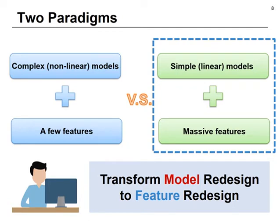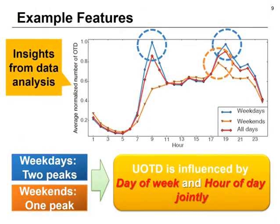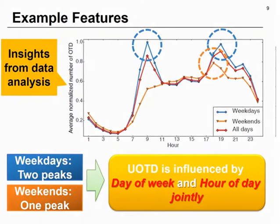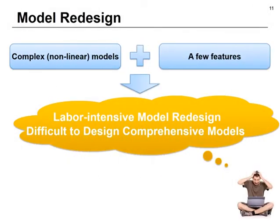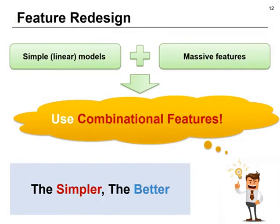It is beneficial to transfer model redesign to feature redesign because you need to frequently add new features. For example, there are two peaks in UOTD in 24 hours on weekdays, but only one peak at weekends. Thus UOTD is jointly influenced by day of week and hour of day. UOTD is also jointly influenced by type of POI and weather conditions. And you don't want to redesign the model every time you add a new feature. With a simple linear model, all these efforts can be replaced by simply using combinational features.